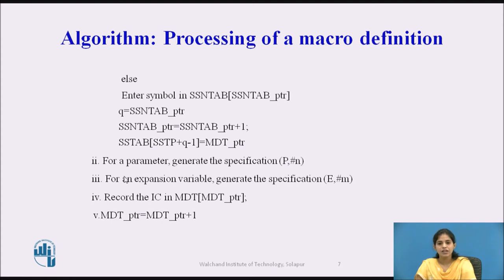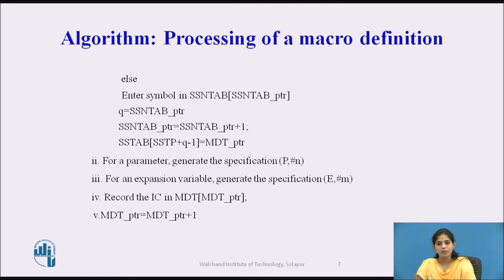For a parameter, we generate the specification in the form P, hash N — where P indicates it is a parameter and hash N indicates the entry number of that parameter in the PN tab. For an expansion variable, we generate the specification in the form E, hash M — where E indicates it is an expansion time variable and hash M indicates the entry number in the EVN table. We then record the IC in the Micro Definition Table and increment the MDT pointer: MDT pointer = MDT pointer + 1.